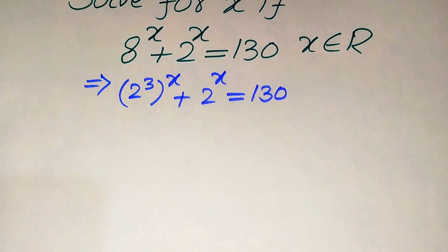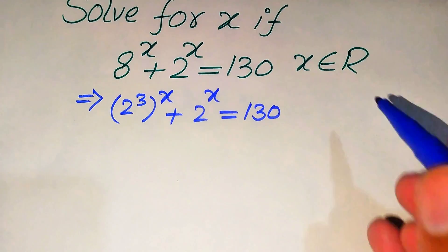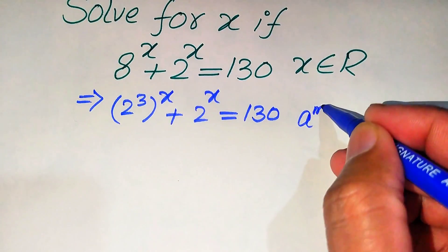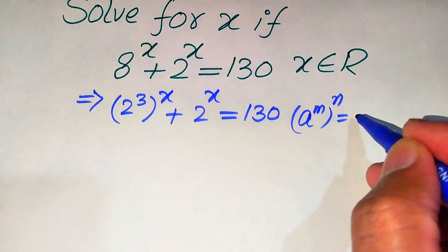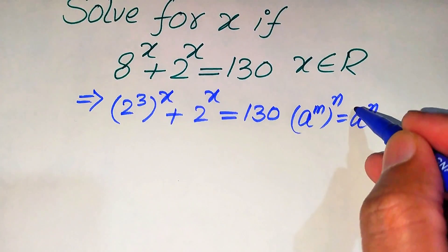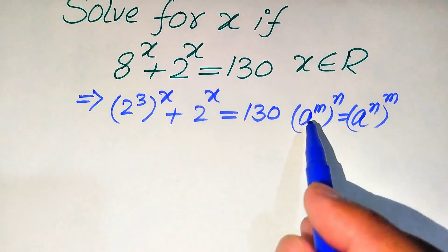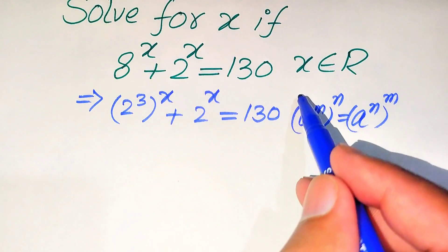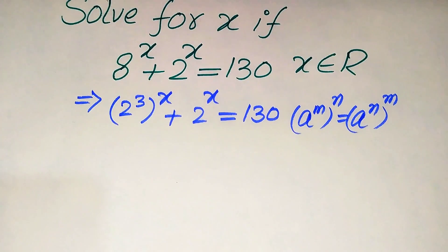In the next step we use the exponent law: if we have a to the power of m, to the power of n, it equals a to the power of m times n. It means that if you have exponent to an exponent, we can interchange these two exponents and always get the same answer.